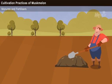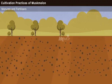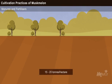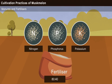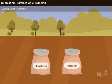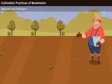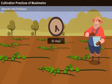Manures and Fertilizers. It is necessary to supplement the soil with well-decomposed farmyard manure at the rate of 15 to 20 tons per hectare. In addition to farmyard manure, NPK fertilizer at the ratio of 80:40:40 kg per hectare is also applied. At first, a full dose of phosphorus and potassium and half dose of nitrogen are applied to the soil while sowing. The remaining half dose of nitrogen is applied after 30 days of sowing.